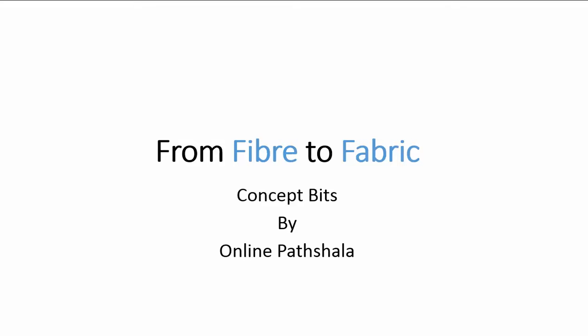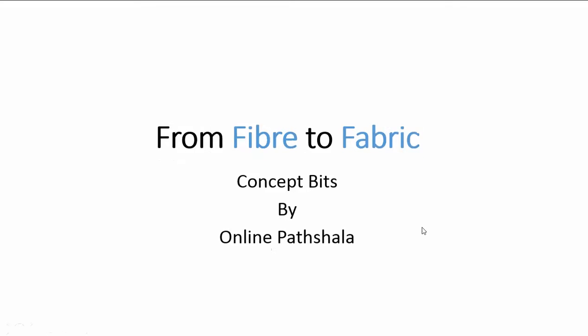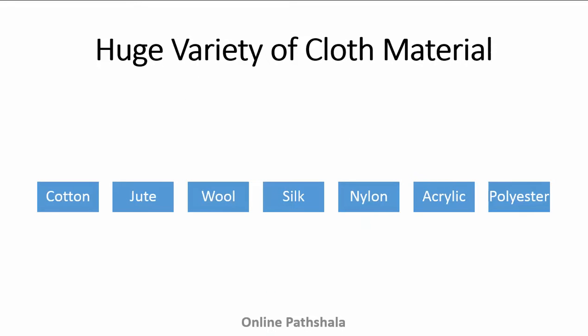From Fibre to Fabric — Concept Bits by Online Paatshala. If we go to a clothes shop, we find a huge variety of clothes material from which different types of clothes are made. Some common examples are cotton, jeans, wool, nylon and so on. Hi, I am Isha Dev and in this video we will highlight how cloth material is created and how we classify cloth materials or fabric.